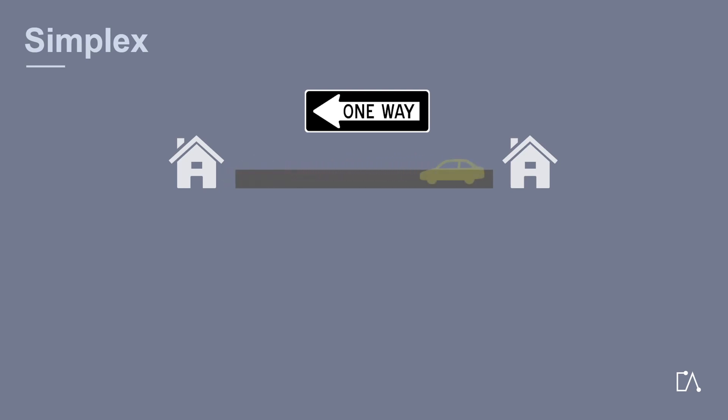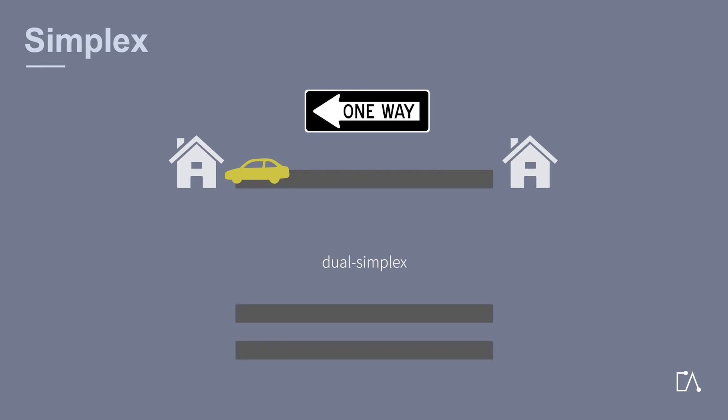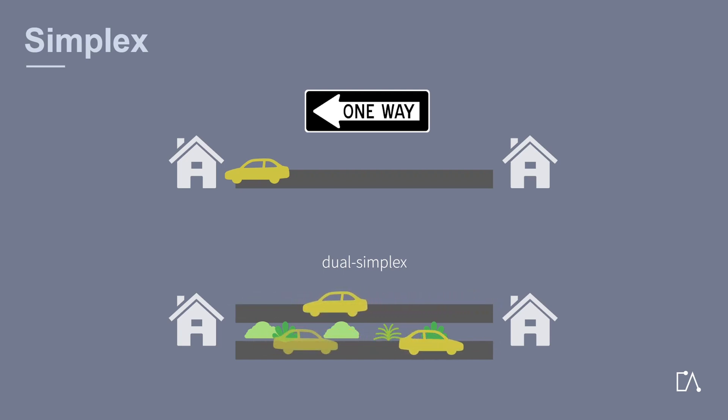A special type of simplex is the dual simplex method. In this case, data exchange is also only possible in one direction. However, there is not only one but two physical communication channels. Therefore, transmission is also possible in both directions. You can imagine it like a motorway: there is one road for one direction and one road for the other direction.